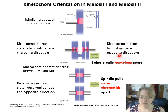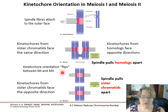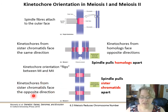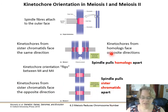The spindle pulls the homologs apart in meiosis one. Then in meiosis two the kinetochore orientation flips — the kinetochores are now facing opposite poles, the interfaces are aligning, and the outer faces are opposite each other. The spindle then pulls the sister chromatids apart at that point.